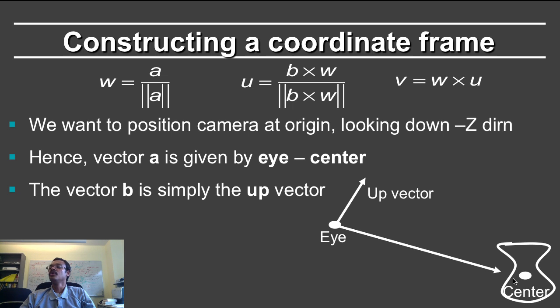Therefore, center minus eye, you want to move that to the minus z direction. Therefore the plus z direction will be given by eye minus center. And that's what the vector a is given by, eye minus center.